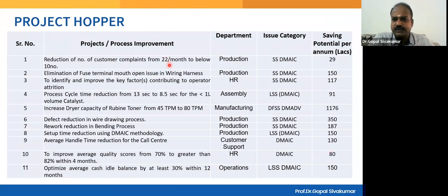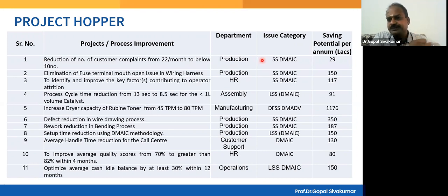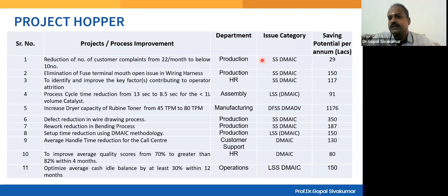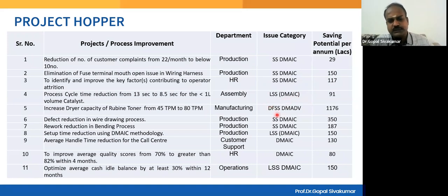A typical Project Hopper looks like this: the project title is given, the department which presented the project is written, and the issue category is listed. In Lean Six Sigma, there are four types of projects: Six Sigma projects (defect reduction), Lean projects (waste elimination), Lean Six Sigma projects (both defect and waste reduction), and DFSS projects (new product development or capacity expansion).